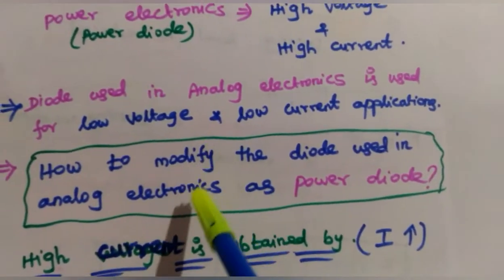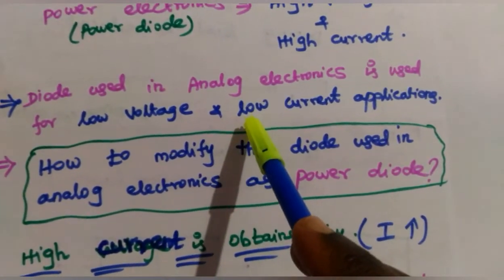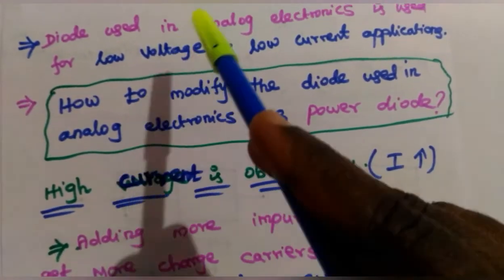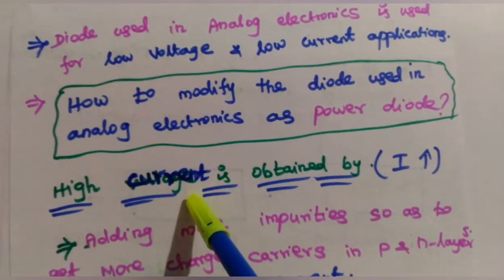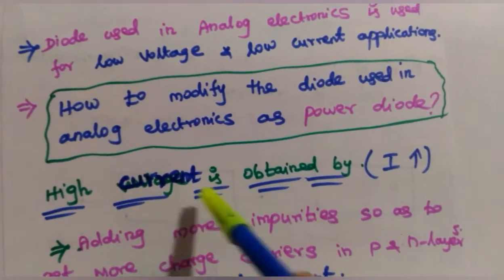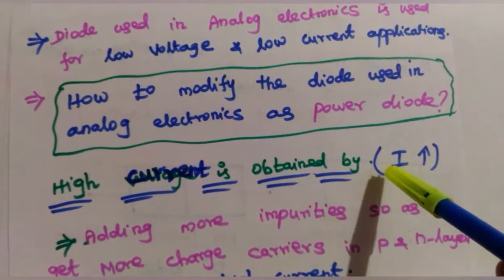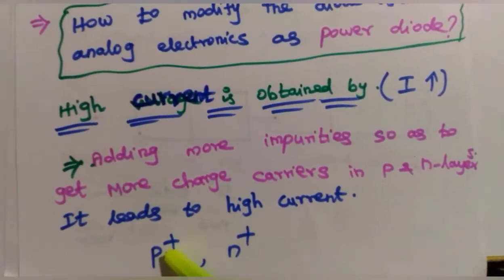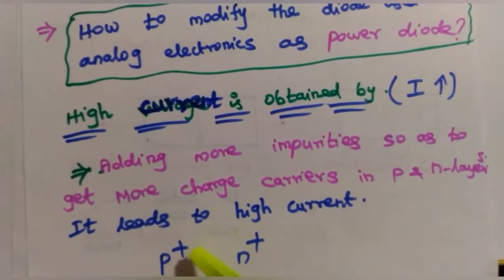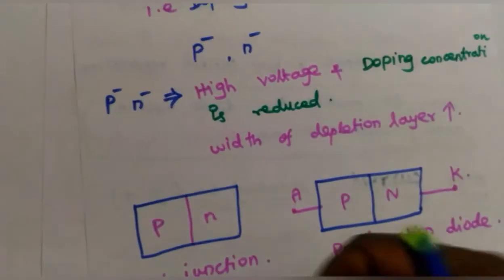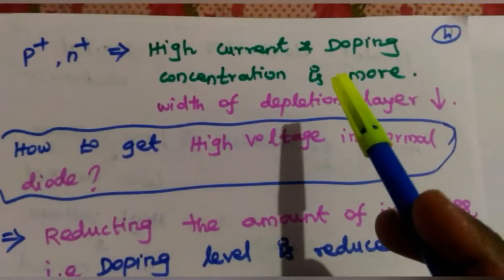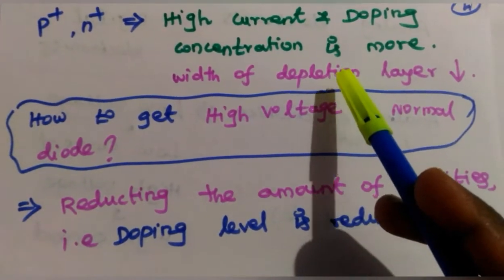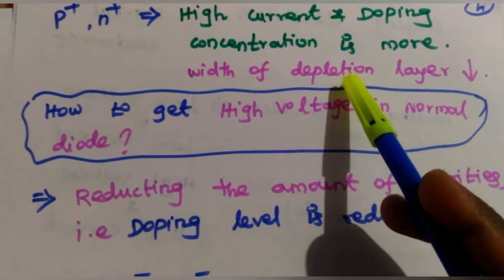How do we modify a low voltage, low current normal diode into a power diode? The structure is different. To make the normal diode produce high current, we add more impurities into the P and N type layers. Adding more impurities increases charge carriers so current increases. The plus symbol on top of P and N layers represents that more impurities are added, increasing doping concentration and reducing depletion layer width.